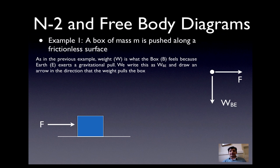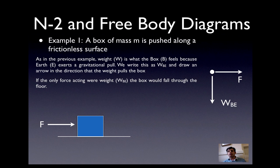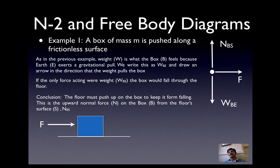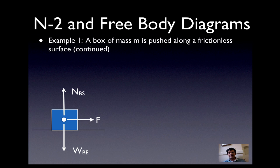If the only force acting were weight, the box would fall straight through the floor. So we conclude the floor must push up on the box — that's the upward normal force, labeled N on the box due to the surface: N, B, S. Normal means perpendicular. It is not the 'natural' force; it is the normal force, and you need to memorize that terminology. So there's our free body diagram drawn on the object, just as you'd do on the AP exam.